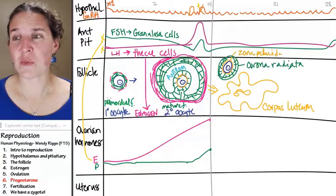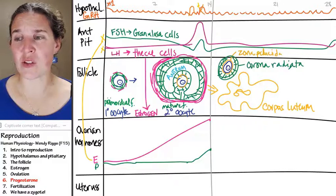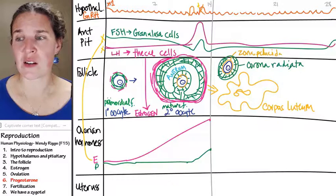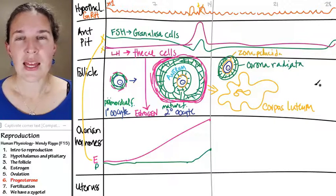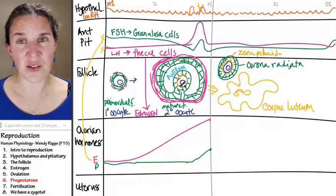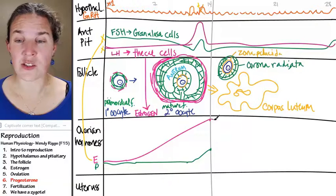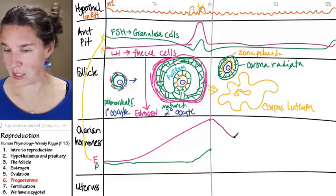First of all, let's figure out what happened to the estrogen. What happens to estrogen at this stage in the game? I can do this. There's my pink. Estrogen, we don't have the follicle anymore. So the estrogen levels are going to drop, just like we would expect.